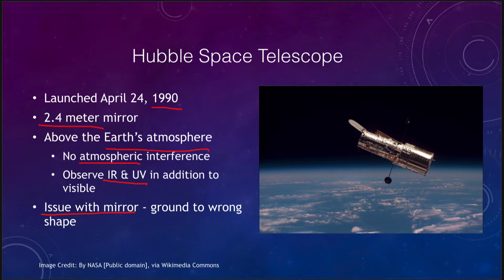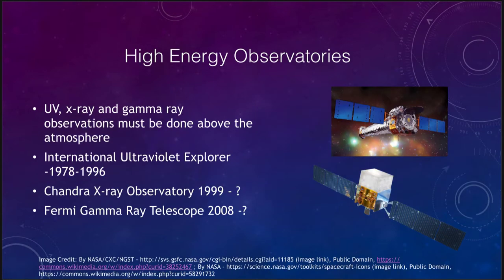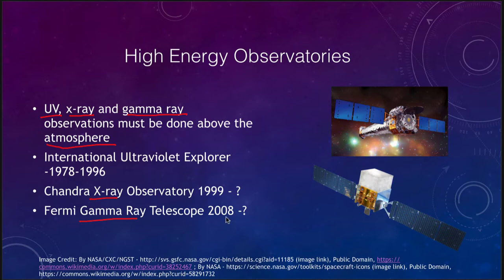Hubble primarily looks at visible light, but we can also look at higher energy observatories — those that look at ultraviolet, x-rays, and gamma rays. For these, you pretty much have to get above the atmosphere to see them. Some examples include the International Ultraviolet Explorer, or IUE, which was up for several decades, constantly scanning and studying objects in the ultraviolet. We also have the Chandra X-ray Observatory and the Fermi Gamma Ray Observatory — Chandra has been up for almost two decades and Fermi for about a decade — studying different parts of the universe across x-ray and gamma ray wavelengths.